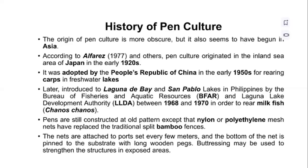The culture of pen was started from Asia and was later introduced in Japan and other countries, where they cultured milk fish. Traditionally, when pen culture started, people used bamboo fences. Now bamboo has been replaced with nylon and polyethylene mesh net, and all sides are covered by nylon mesh or a bamboo fence.